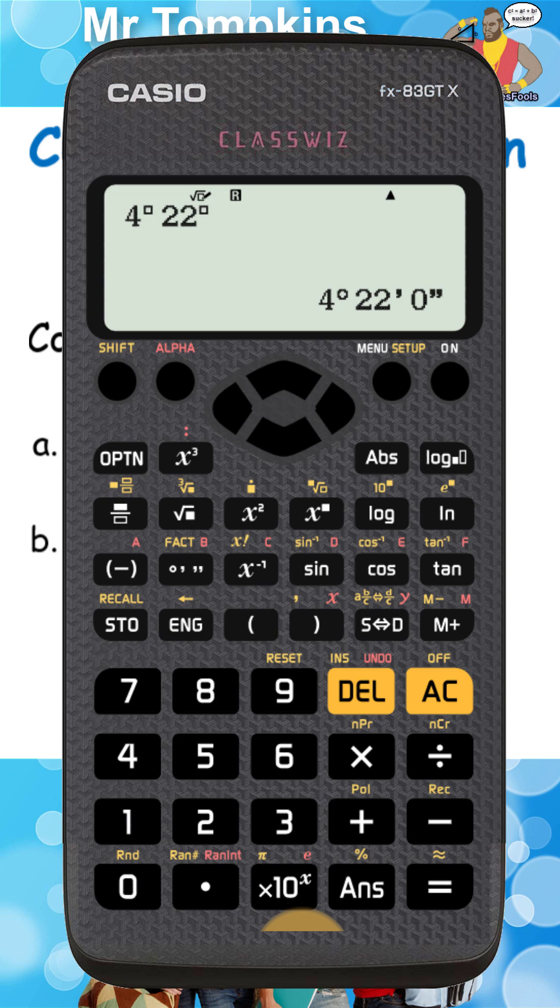Now if I want to convert that just into hours, which is handy for calculations with time, I'm just going to press the symbolic to decimal key. That turns it into a fraction of 131 over 30.